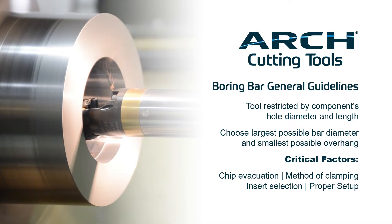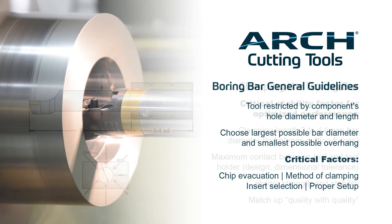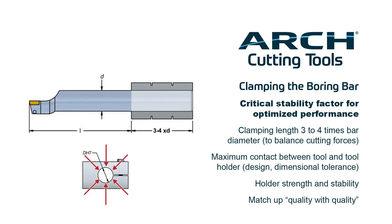Modern high-performance boring tools must be clamped with high stability so as not to introduce a weak link in the setup. To start, it is important to clamp onto a minimum of three to four times the bar's diameter to help equalize the cutting forces. Split collars and sleeves are highly recommended to create the most contact between the bar itself and the holder.